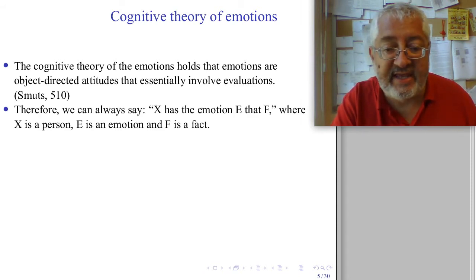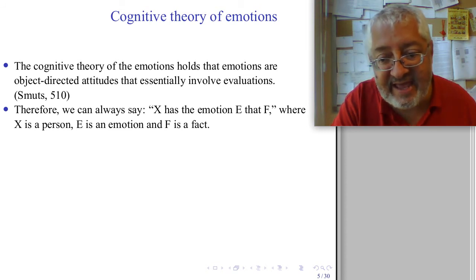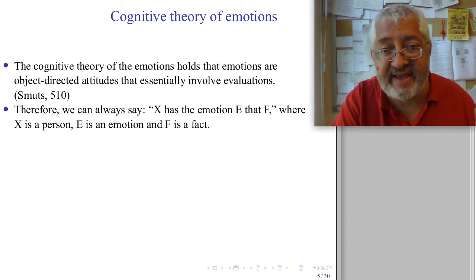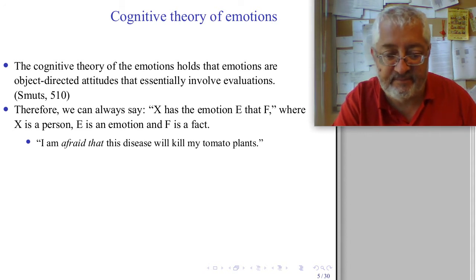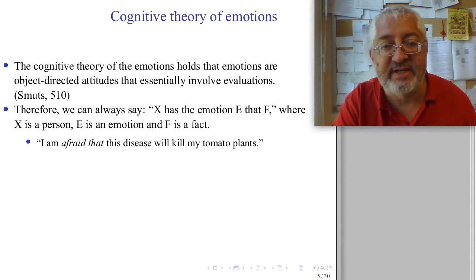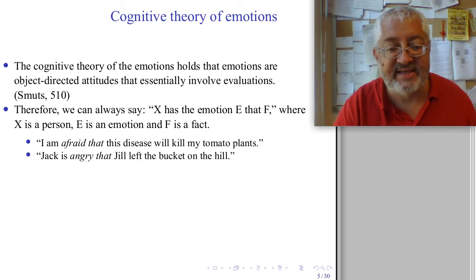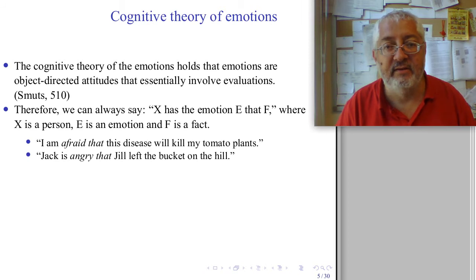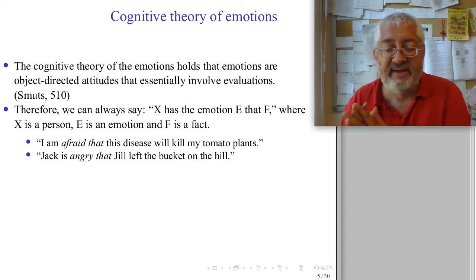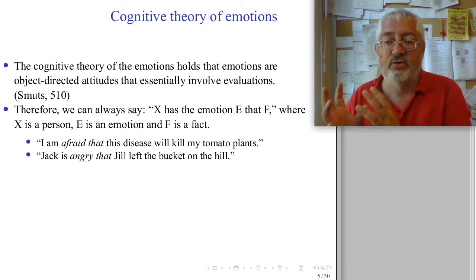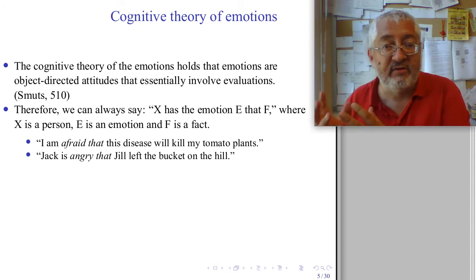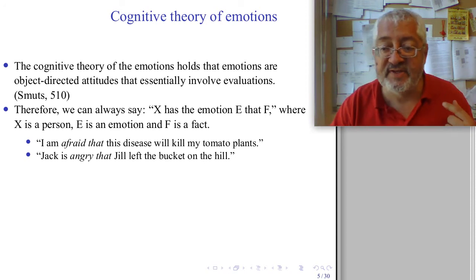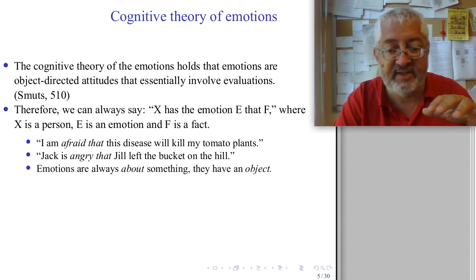We can always say X has the emotion E that F, where X is a person, E is an emotion, and F is a fact. X's emotion E is directed towards a fact F. For example: I am afraid that this disease will kill my tomato plants. Jack is angry that Jill left the bucket on the hill. We are always afraid that, angry that — some fact F. This is what defines an emotion.